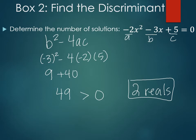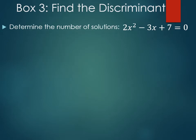And why is it two real? Because it's greater than zero. Was that doable? Okay, this is fine, right? In box three you're going to do your own example. You have 2x² - 3x + 7 = 0. Find the discriminant and determine the number of solutions. You can talk to each other, you can check with each other.